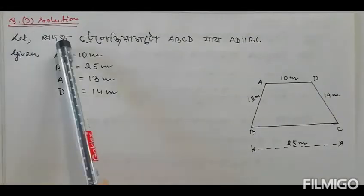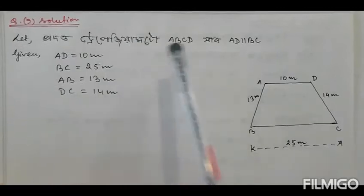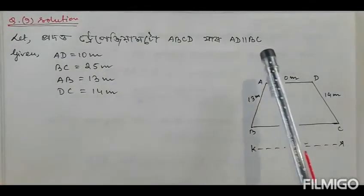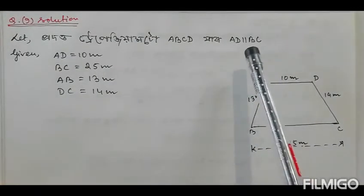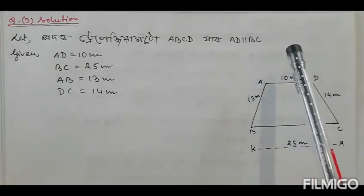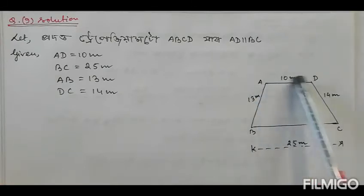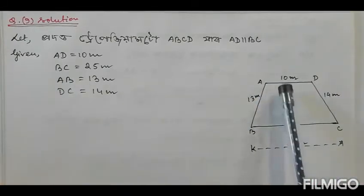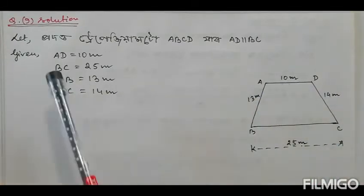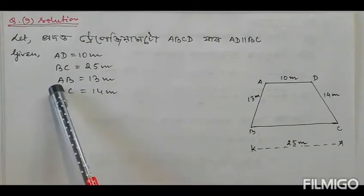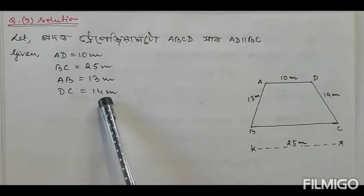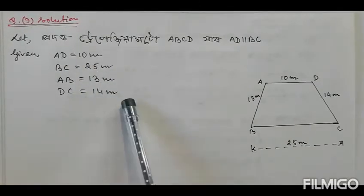The trapezium dimensions are as follows: AD is 10m, BC is 25m, AB is 13m, and DC is 14m.